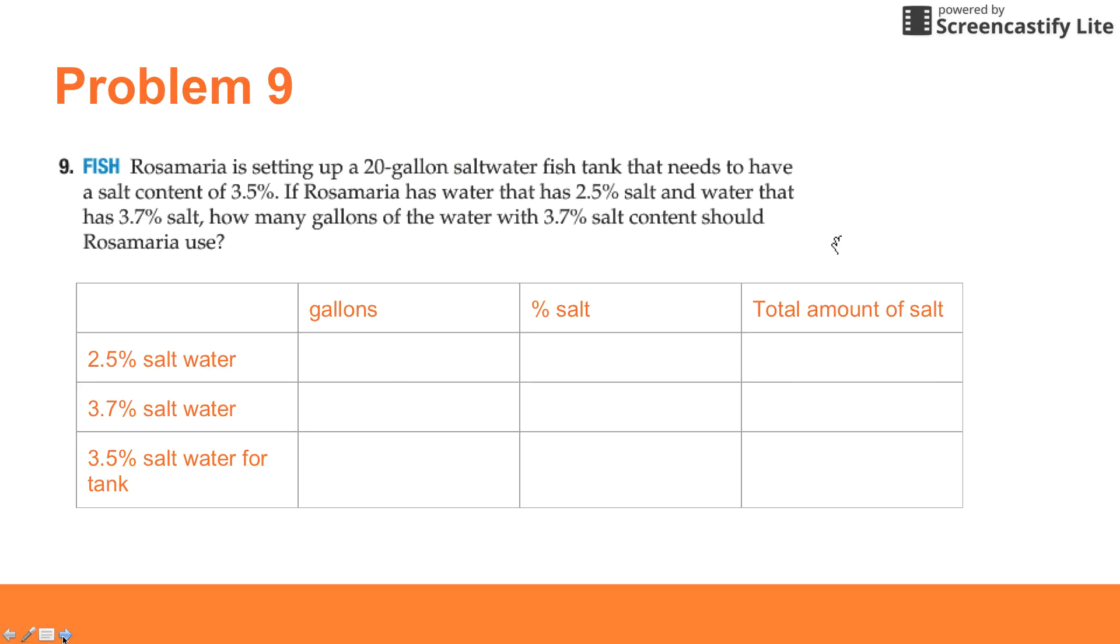Problem 9: we've got a 20-gallon saltwater fish tank that we're setting up, so our mixture or our total that we're coming up with is 20 gallons. It needs to have a salt content of 3.5%, so that would be 0.035. She has water that has a 2.5% salt content and she has water that's 3.7% salt content.